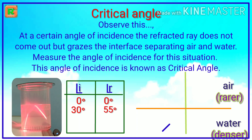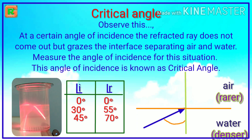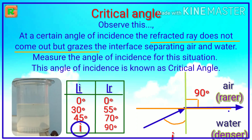Now take the incident ray with an angle of incidence of 45 degrees. Here, let us assume the angle of refraction is 70 degrees. While increasing the angle of incidence in this way, at a particular angle of incidence the angle of refraction becomes 90 degrees. That particular angle of incidence is called the critical angle, because the refracted ray does not come out but grazes the interface separating air and water.